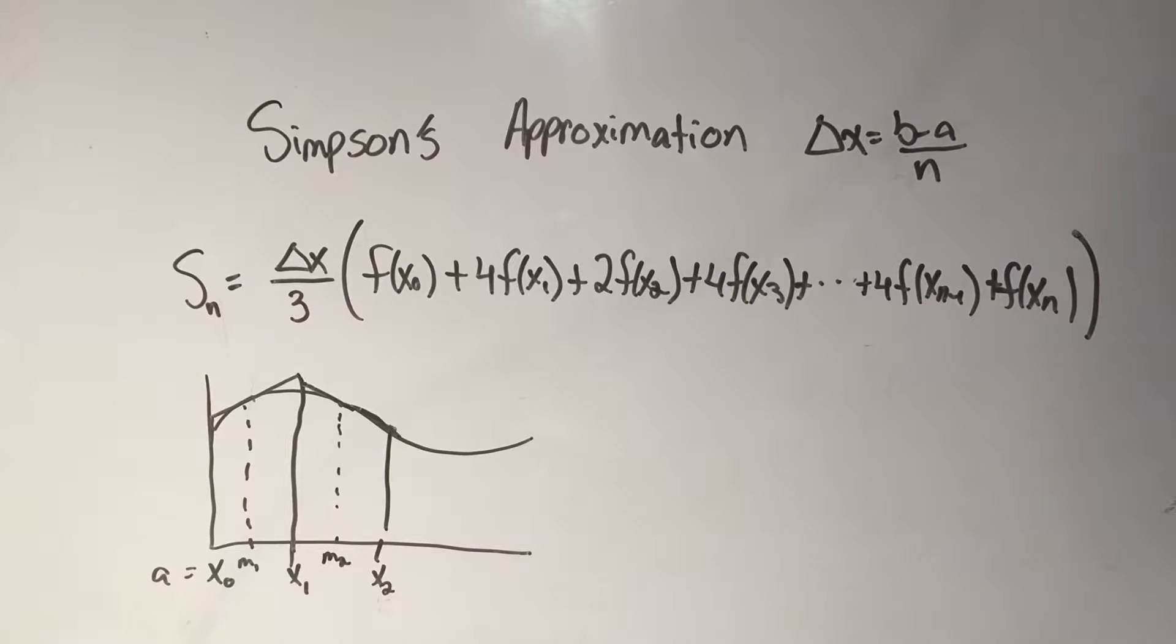And this is probably the most annoying one, so if you've done the midpoint rule, the left hand sum rule, the right hand sum rule, and the trapezoid rule, if you've done all those, now it's time to learn Simpson's rule, it's the most complicated.